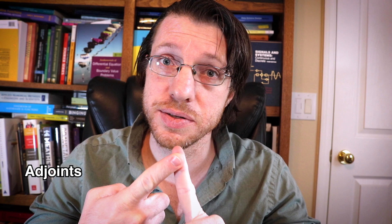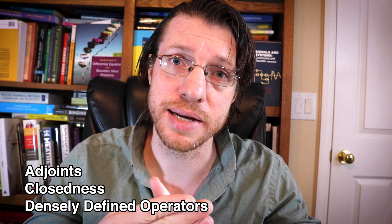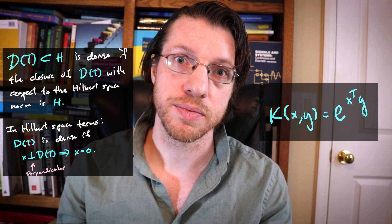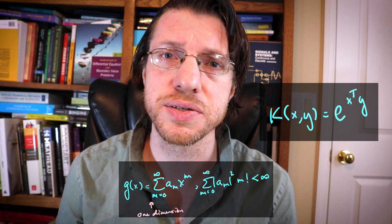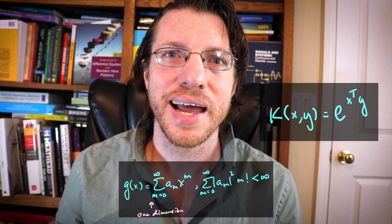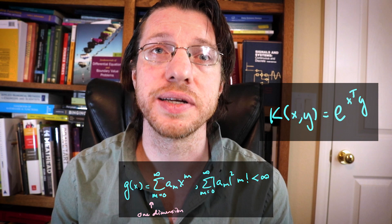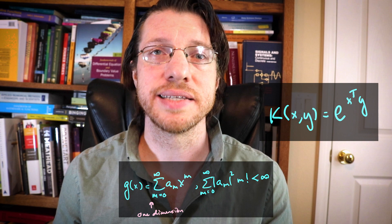We need to talk about adjoints, closeness, and densely defined operators — all of these properties depend on the domain. An operator is densely defined if the domain is dense inside the Hilbert space it acts on. For instance, take the exponential dot product kernel space given in terms of power series with coefficients that are little-l2: for the single variable case we have a regular power series where the coefficients satisfy the sum of a_n squared times n-factorial being less than infinity. This gives kernel function e^(xy), or in higher dimensions e^(x^T y), sometimes with a parameter mu.